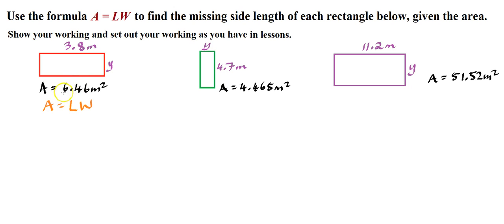And all we need to do to solve these problems is substitute what we know into the formulas. So we are given the area, and here it is here. So instead of writing A, for the next line of solving, we can say 6.46, because that is the value of A.